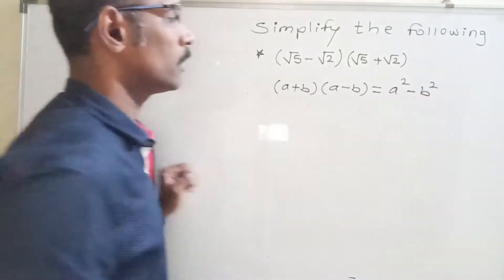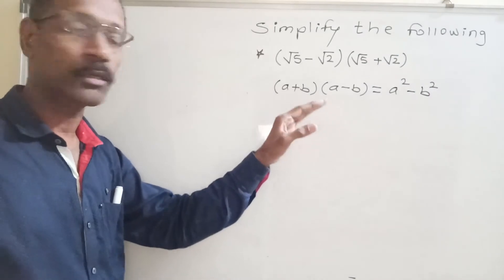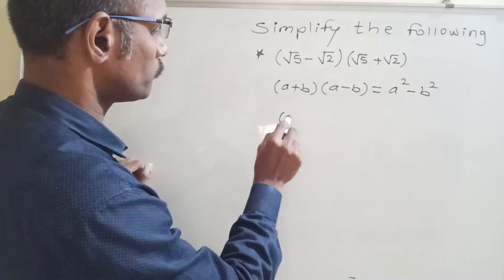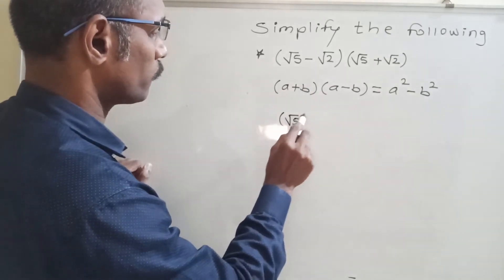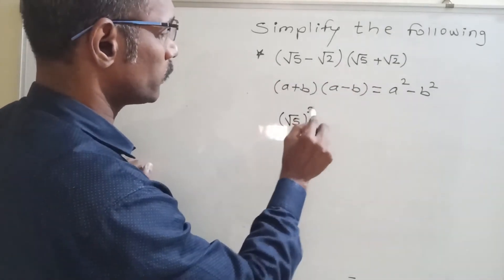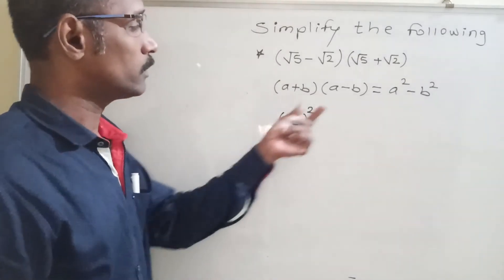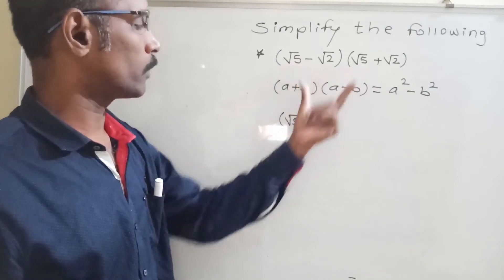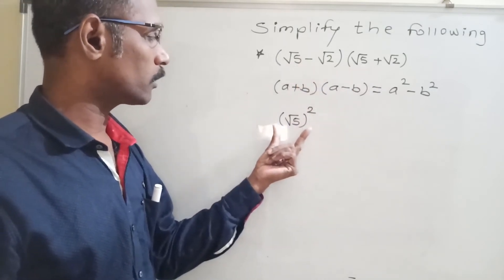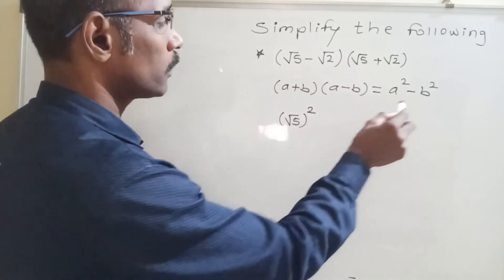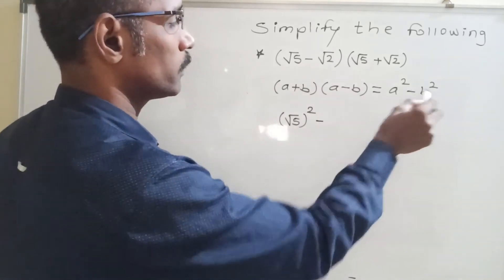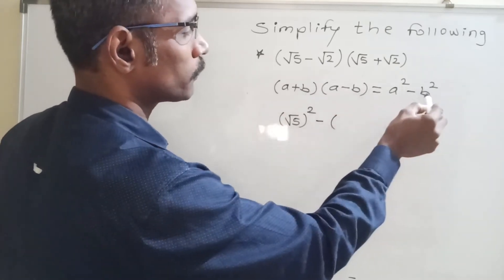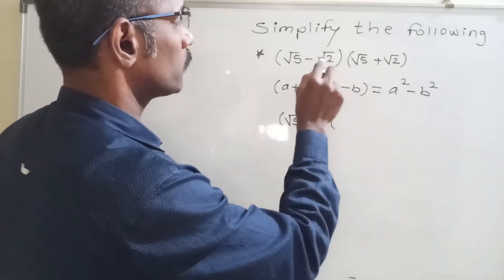We apply this formula of identity. Now here see, this first term root 5, root 5, that is bracket square means here a squared. Same way here root 5, root 5, therefore we write here root 5 bracket squared. Then we put here minus sign, then here b squared, therefore root 2 bracket squared.